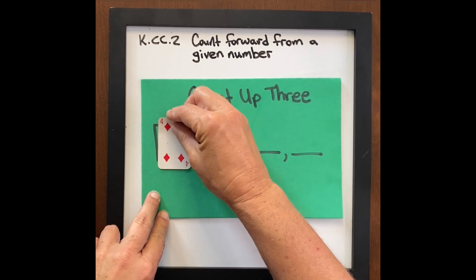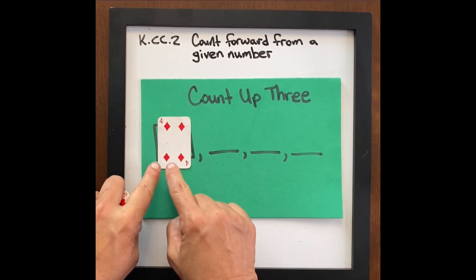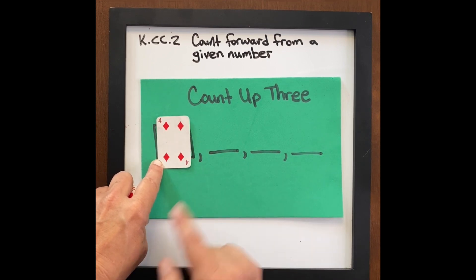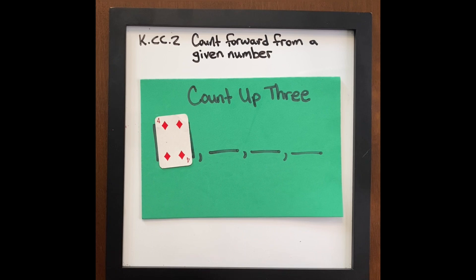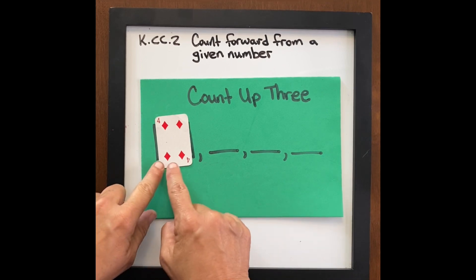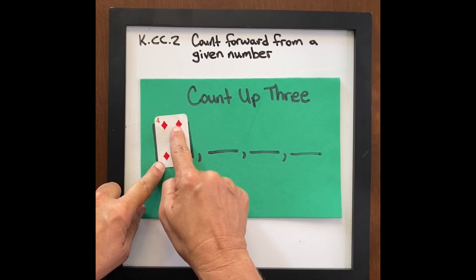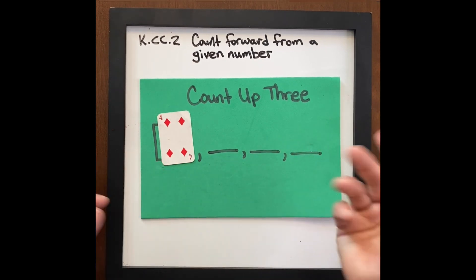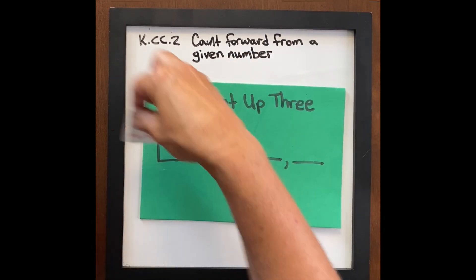So I'm going to turn over a card. Students are able to see the quantity of four by touching them if they need to. Some students might need that, some students might not. You might have students that need to say one, two, three, four, five, six, seven. And if that's where they're at, that's where they're at. We are here to practice.